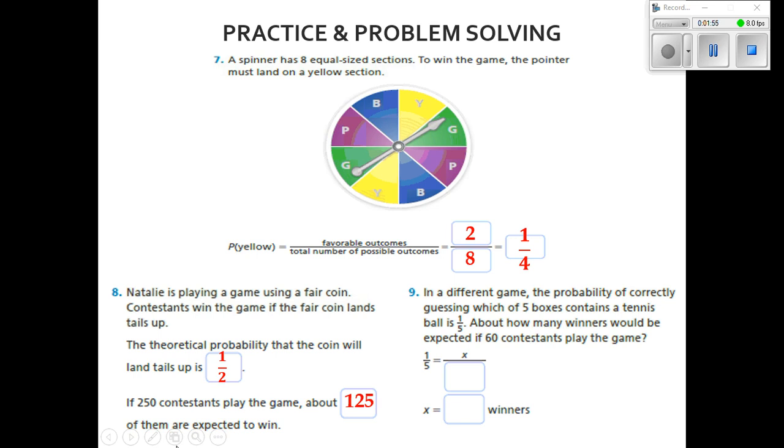Remember that means we've got to take one out of five and set it equal to x out of 60. We said that there are going to be 60 contestants, so that would be 60.